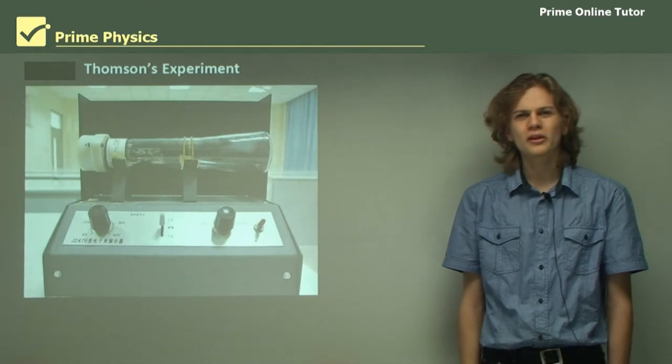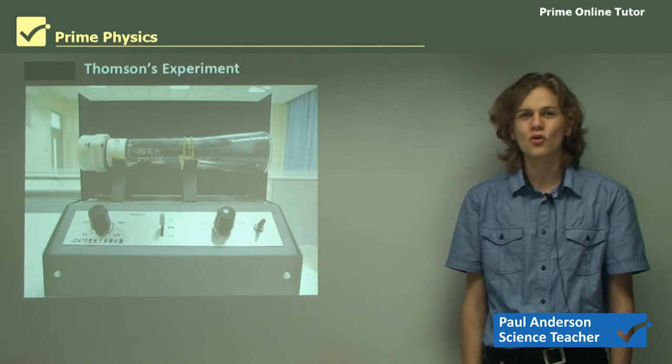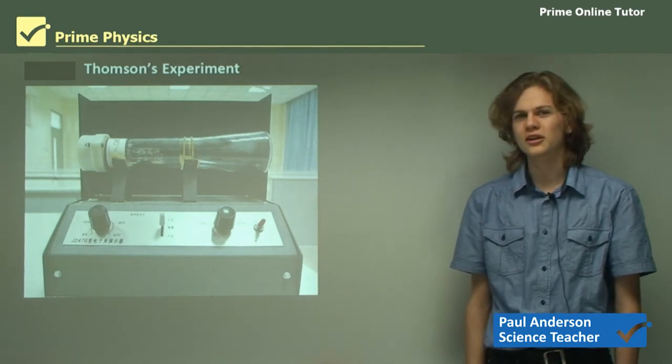Hello everyone. Today we'll be learning about J.J. Thompson's experiment to find the charge to mass ratio of an electron. Here we can see a replica of the experimental setup that he used.